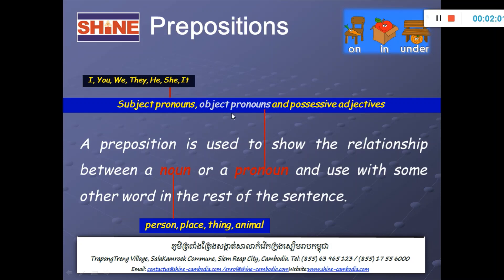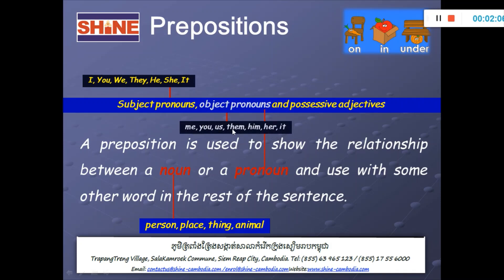Object pronoun. We use object pronoun to write at the end of the sentence. Me, you, us, them, him, her, it.